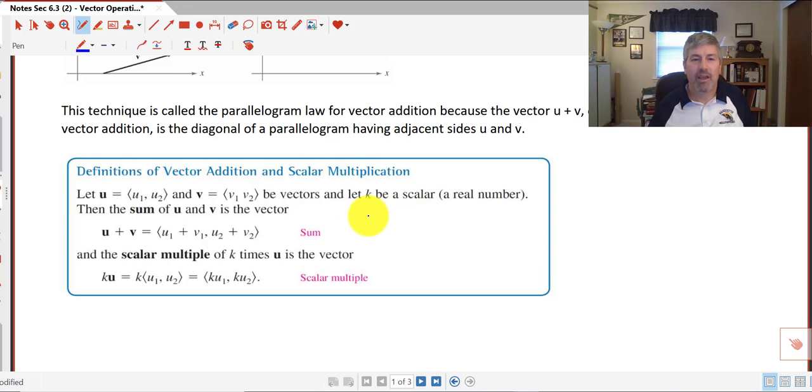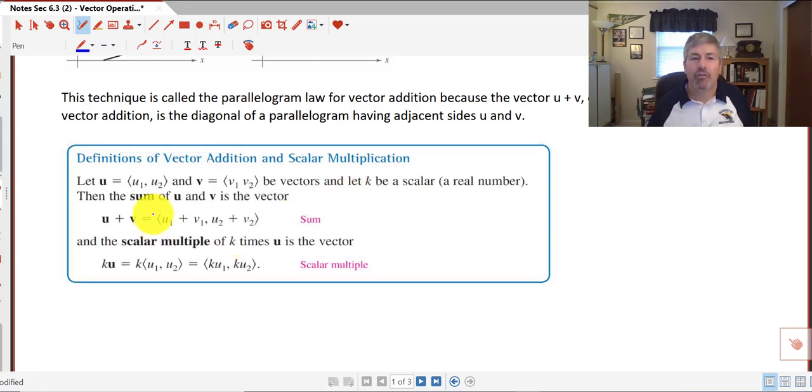Right out of our textbook, the definitions of vector addition and scalar multiplication are listed here. As you can see, to add two vectors, we just take the first coordinate of one vector and add it to the first coordinate of the second vector, and then we take the second coordinate of the first vector and add it to the second coordinate of the second vector. And there's your vector addition.